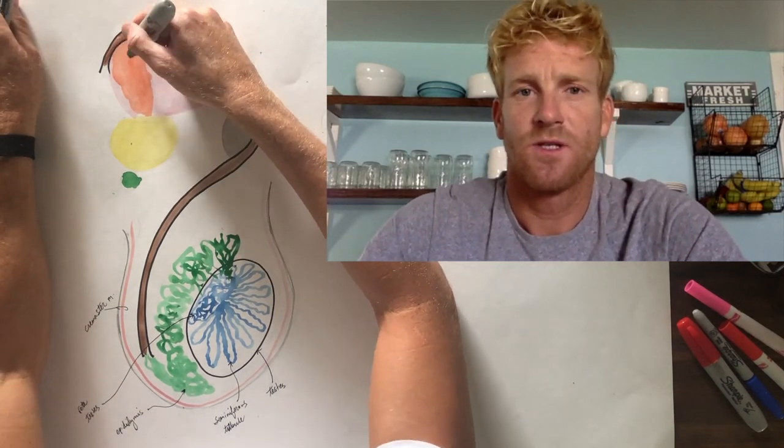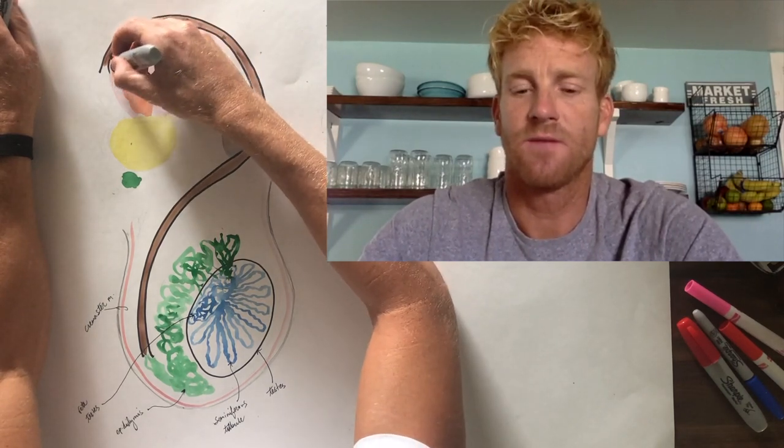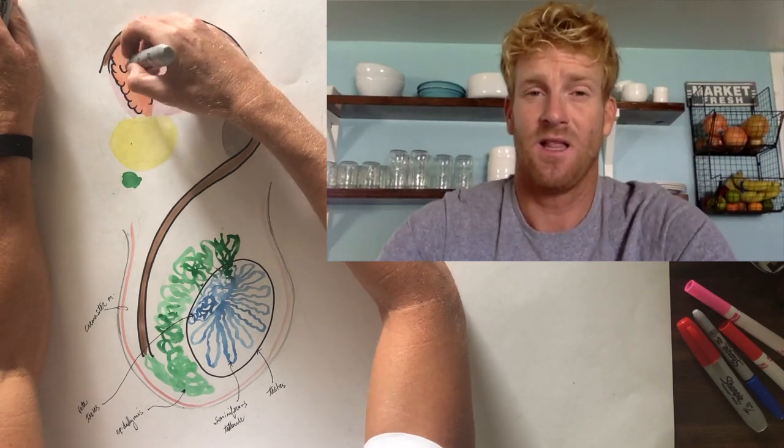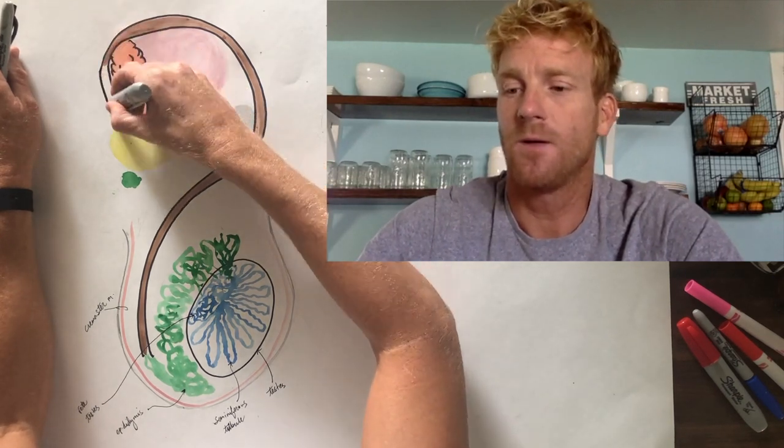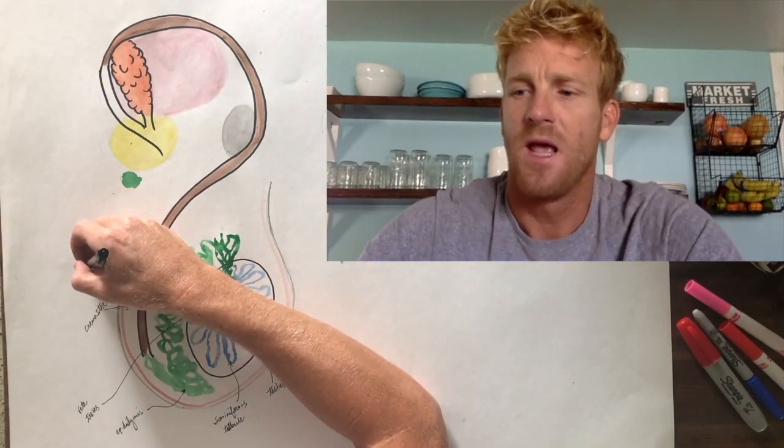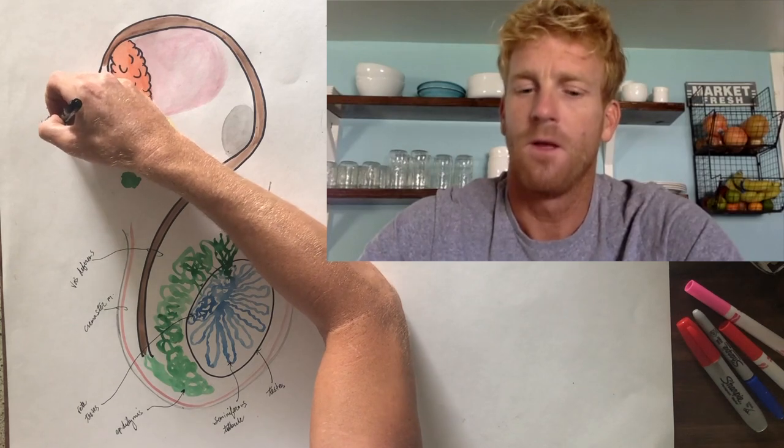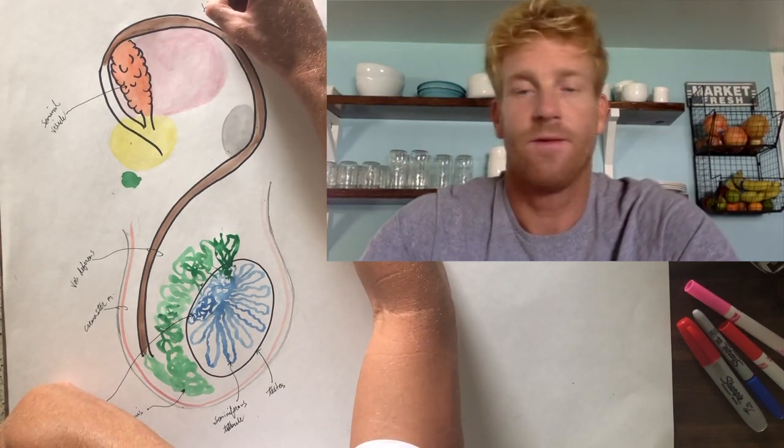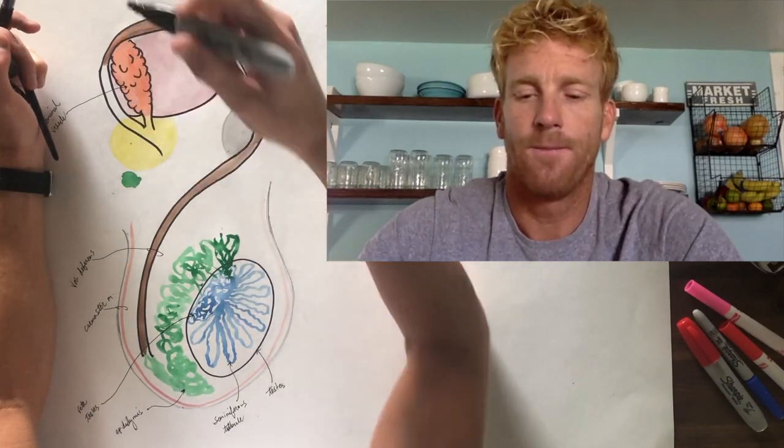When this vas deferens goes around behind the bladder, it's going to meet up with the secretion of one of the male accessory glands. The first one is called the seminal vesicle, which I've drawn in orange. The seminal vesicle is going to produce a yellowish fluid which contains a lot of nutrients which help to nourish the sperm. It also is going to contain some coagulation factors which help hold the sperm inside the female womb. We'll talk about that next time with female reproduction. And then it also contains like a yellowish pigment which fluoresces under ultraviolet light. That's why the police, the FBI, they can detect the presence of sperm after the fact in a location using UV light, because that yellow pigment will fluoresce.